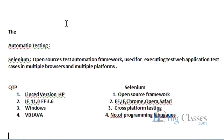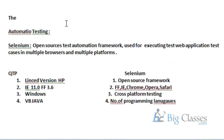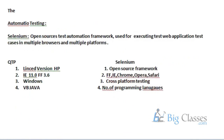Now, what are the advantages of QTP? Since we discussed the general advantages of Selenium, now what are the advantages of QTP? By using QTP, we can automate three-tier applications along with two-tier applications also. It supports two-tier applications and it supports three-tier applications. So what do you mean by two-tier and three-tier?